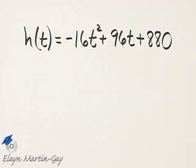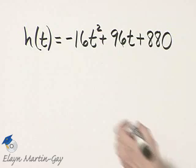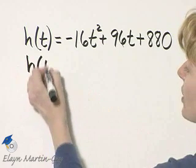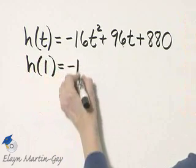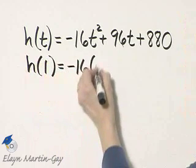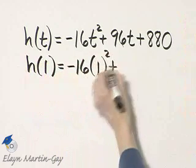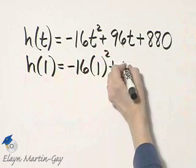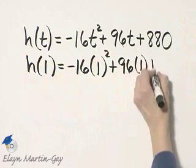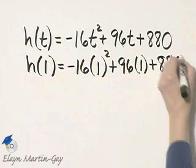So if we want to find the height of the pebble when t is 1, we basically want to find h of 1. And everywhere there's t, we put 1.